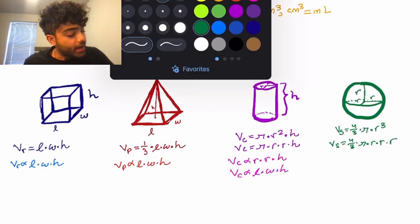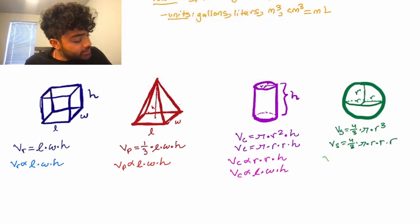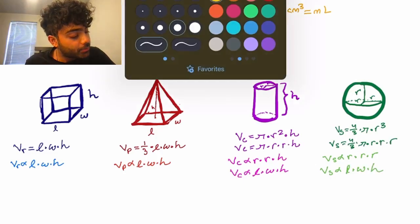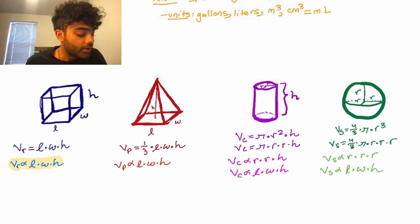Finally, we have our sphere. So v sub s is proportional to r times r times r, because the four-thirds pi is a constant, but those describe length, width, and height as well. So once again, v sub s is proportional to length times width times height. And this is the key proportionality of volume, is that volume is proportional to length times width times height.